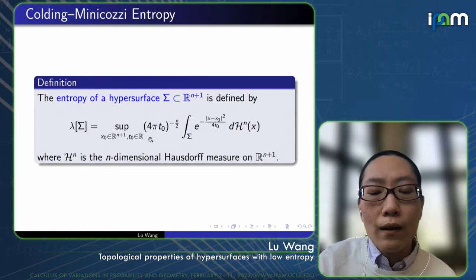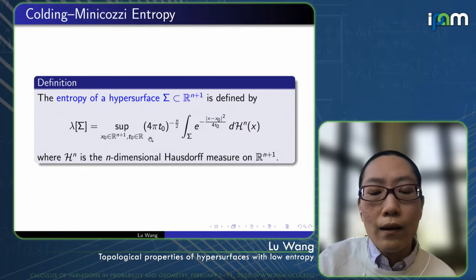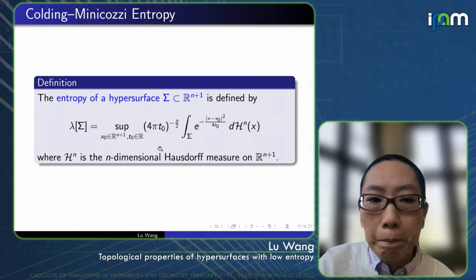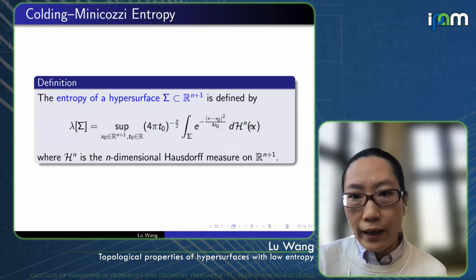The T_0 should be positive here. So of this Gaussian surface area over sigma. My notation here is that this ℋ^n denotes the n-dimensional Hausdorff measure on the Euclidean space.